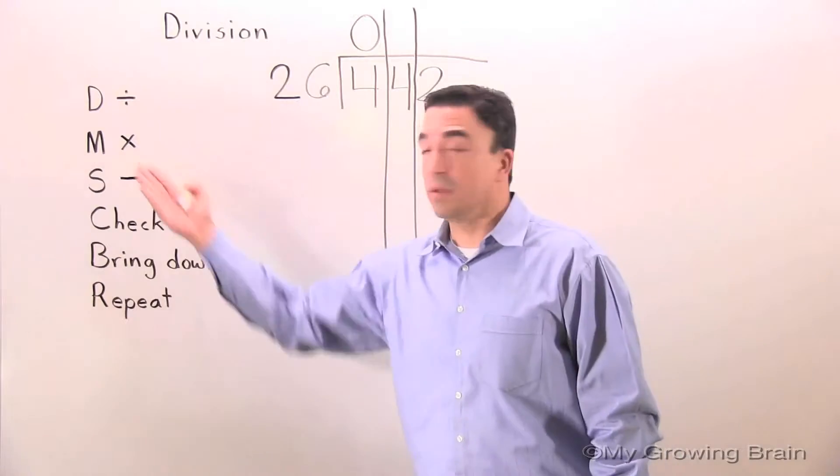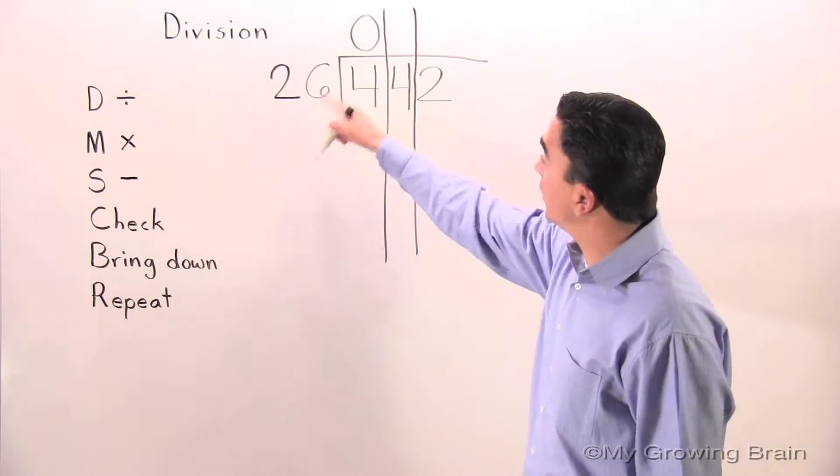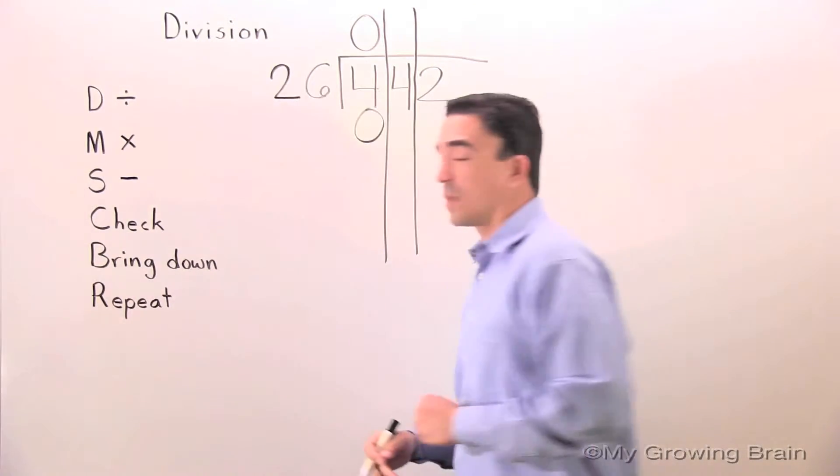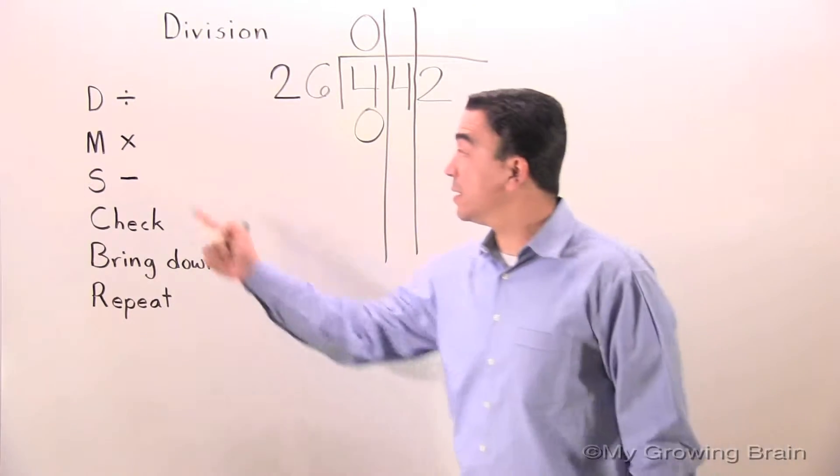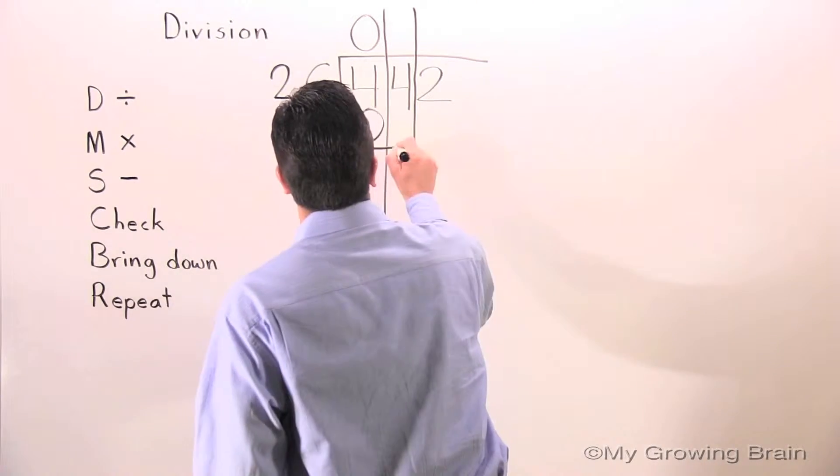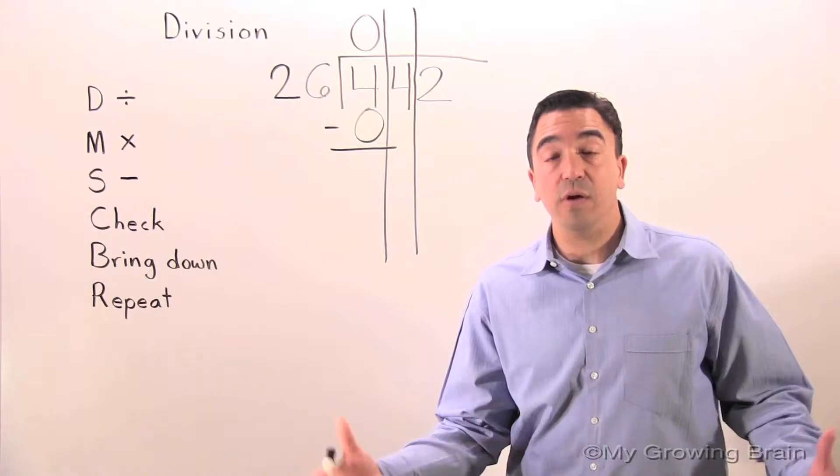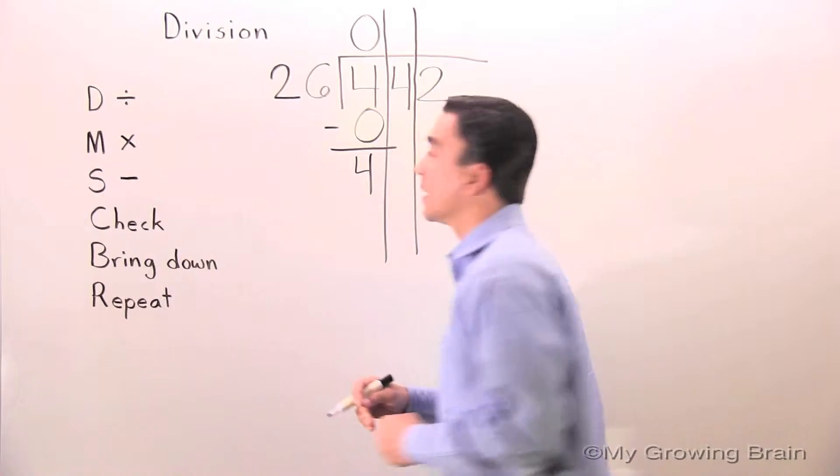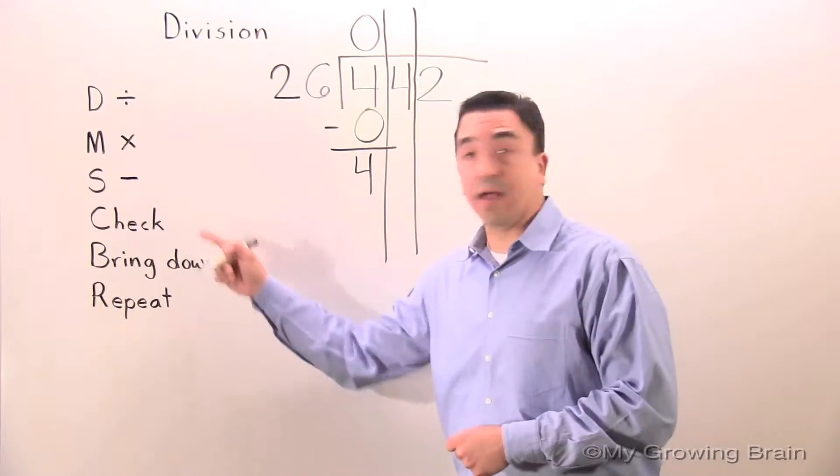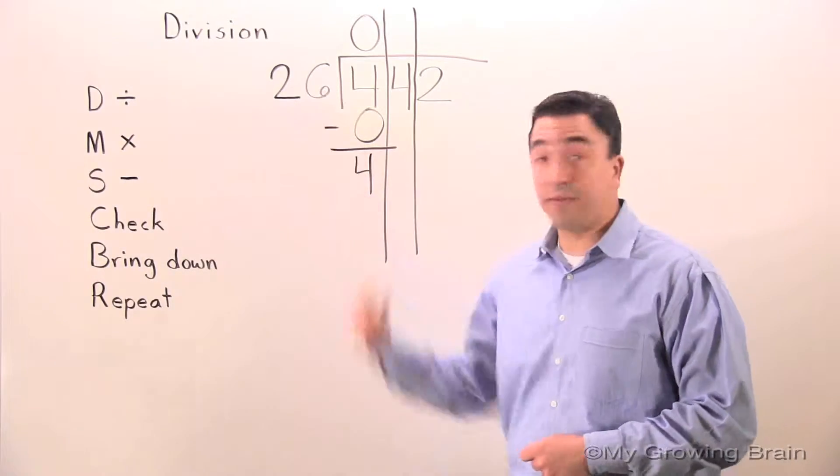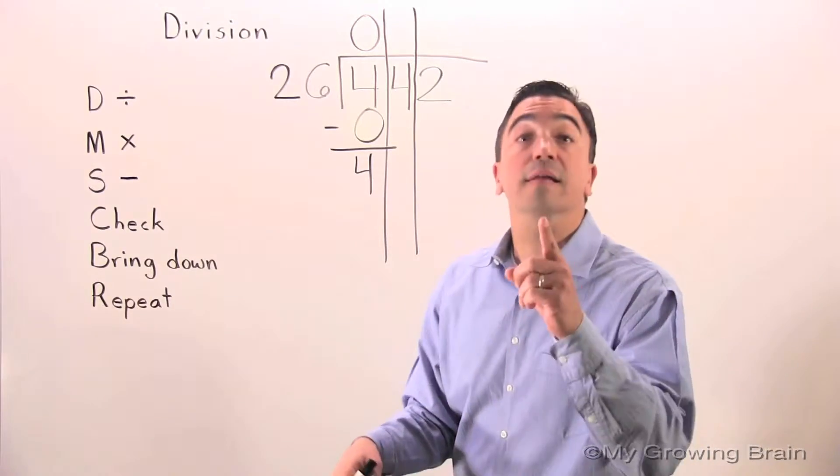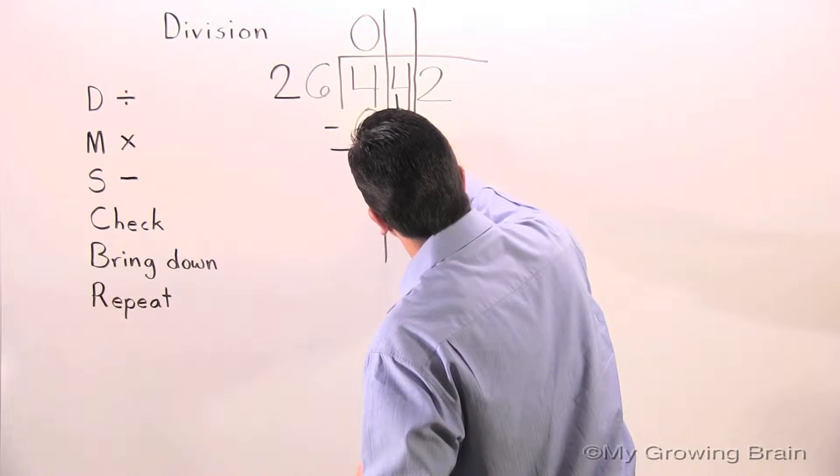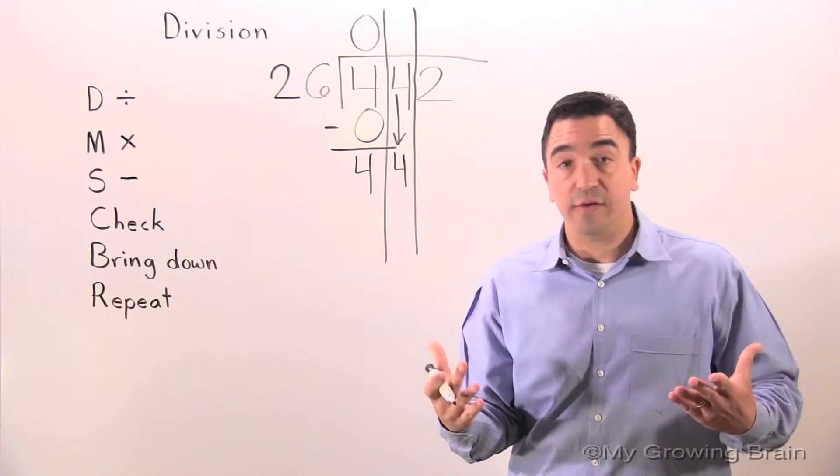Next step. Multiply. 26 times 0. 0. Next step. Subtract. 4 minus 0. 4. Next step. Check. 4 is less than 26. Keep on going. Next step. Bring down.